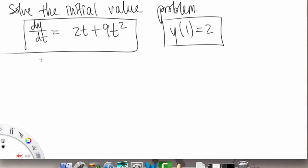We have dy/dt and then on the right side we have 2t plus 9t². So on both sides we're going to integrate with respect to t.